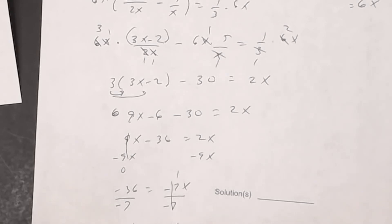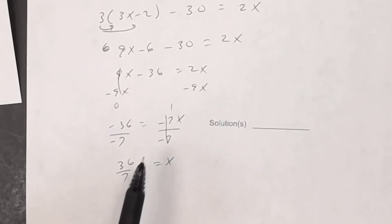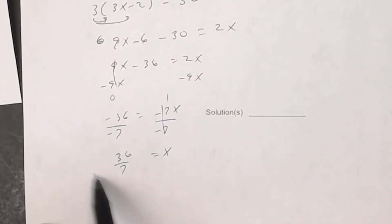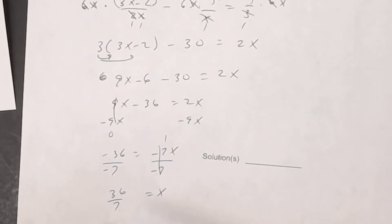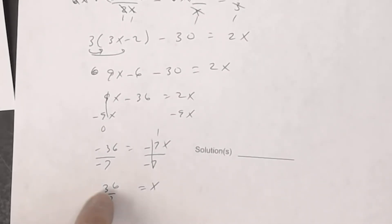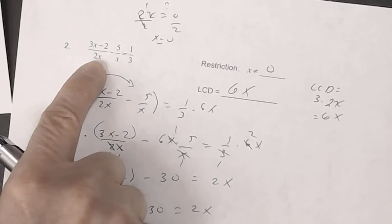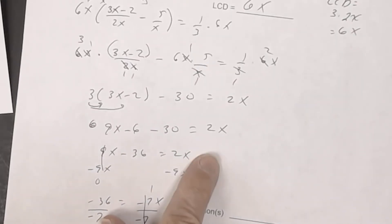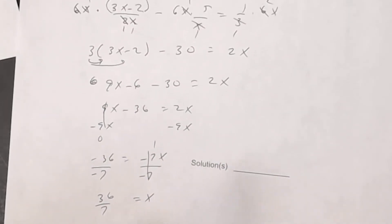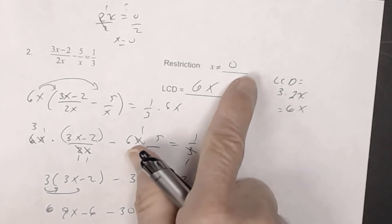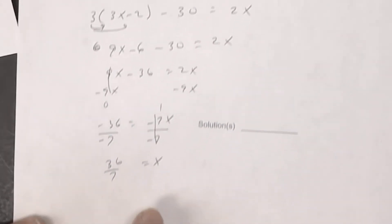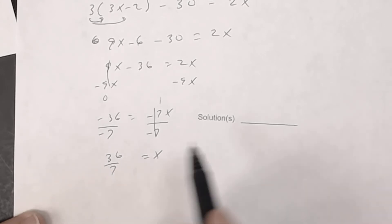Since there was a restriction, check that the solution x equals 36/7 is not restricted. The restriction was x cannot equal 0, and 36/7 is not 0, so the solution is valid. x equals 36/7 is the answer.